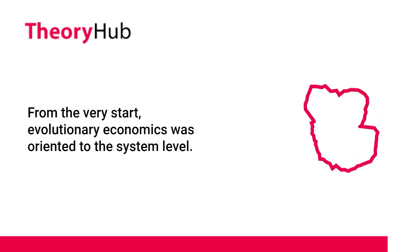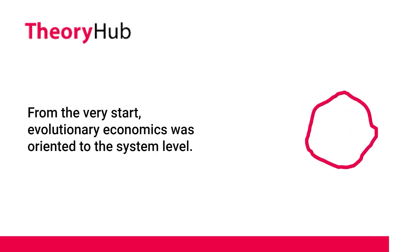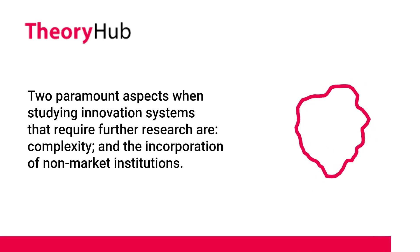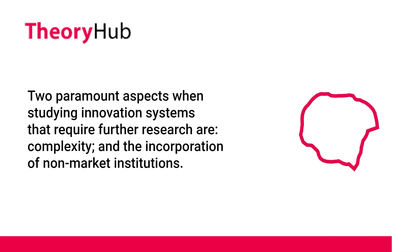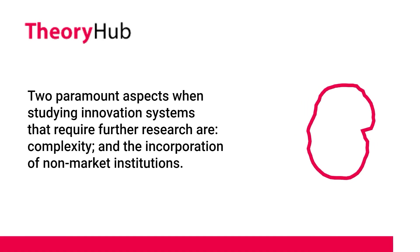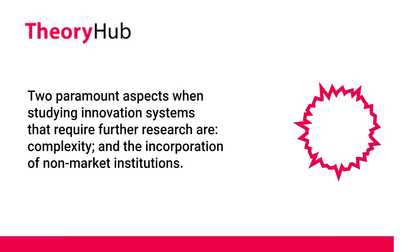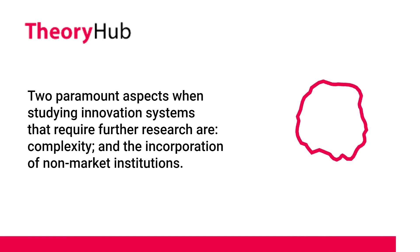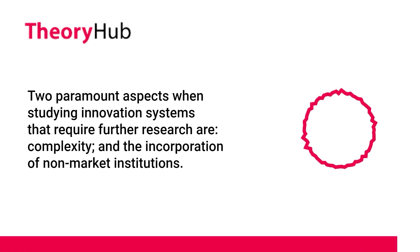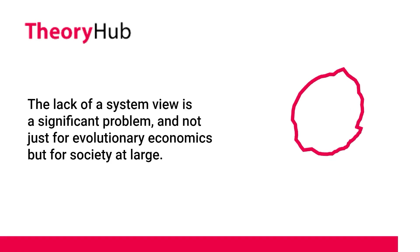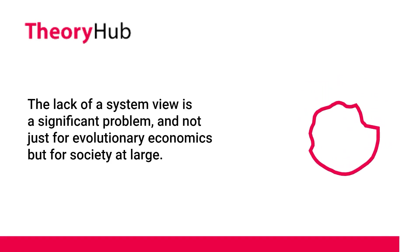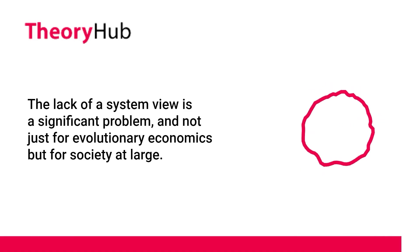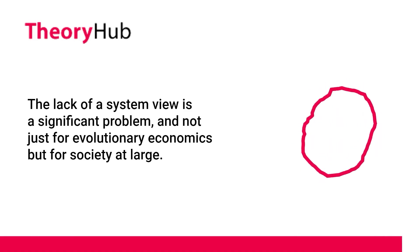From the very start, evolutionary economics was oriented to the system level. Two paramount aspects when studying innovation systems that require further research are complexity and the incorporation of non-market institutions. The lack of a system view is a significant problem, and not just for evolutionary economics but for society at large.